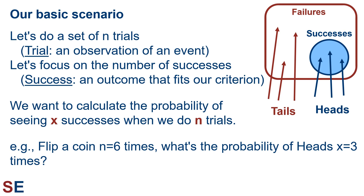Let's think about the basic scenario for binomial probability. We'll do a series of n trials where we are looking at the outcome of our events in a sample space. Each trial will be an observation of an event. Let's focus on the number of successes, where a success is an outcome that fits our criterion. An example would be flipping coins, where each trial is a coin flip, and we can define heads as a success and tails as a failure.